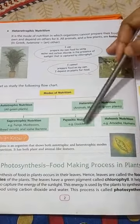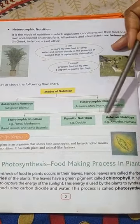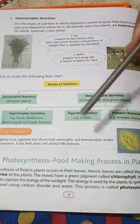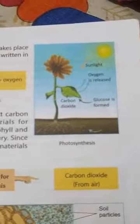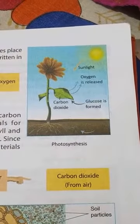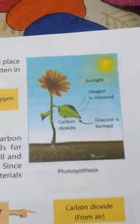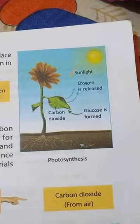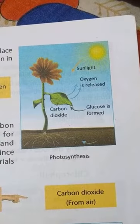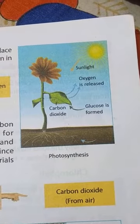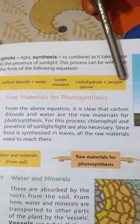Heterotrophic nutrition is further classified into three groups: saprotrophic nutrition, parasitic nutrition, and holozoic nutrition. We will study all these types in the next class. Now we will do the process of preparation of food in plants, which is known as photosynthesis. The equation of photosynthesis is: carbon dioxide plus water, in the presence of sunlight and chlorophyll, produces carbohydrate and oxygen.